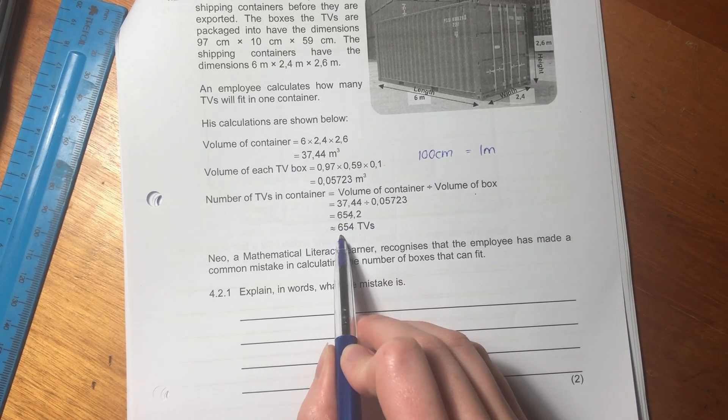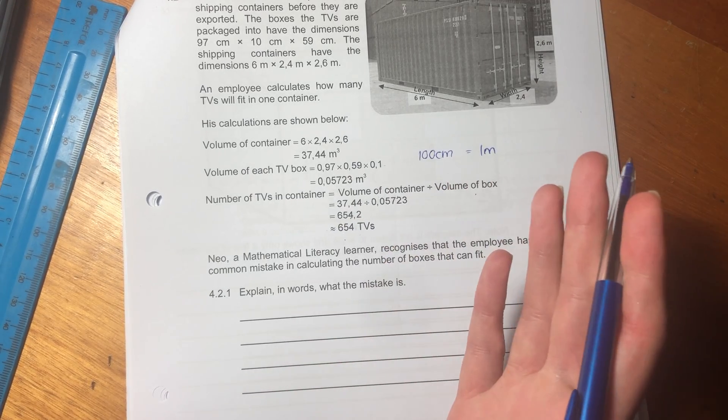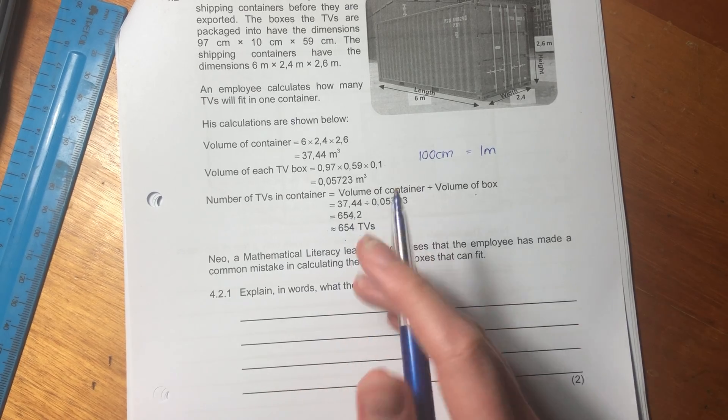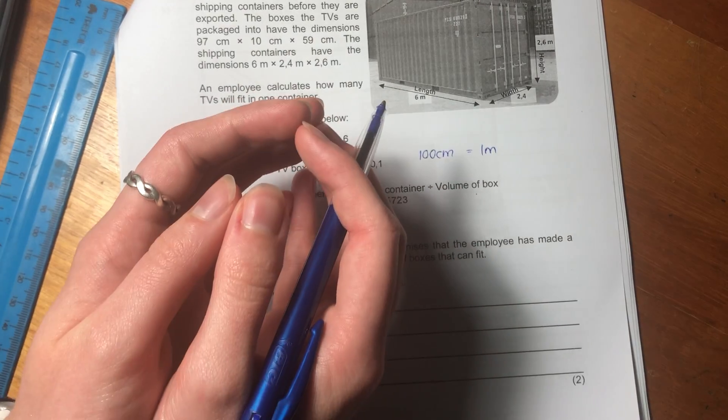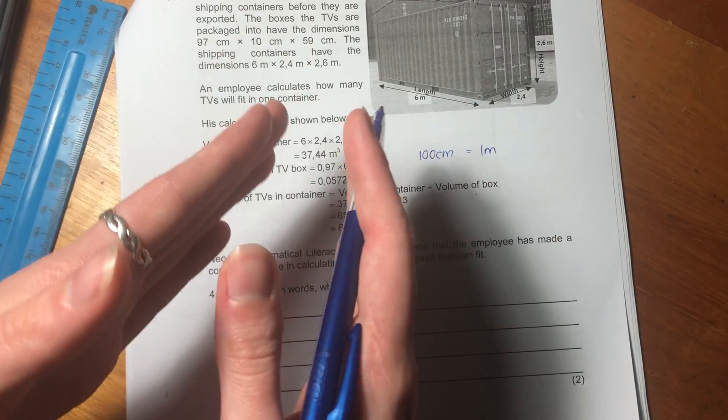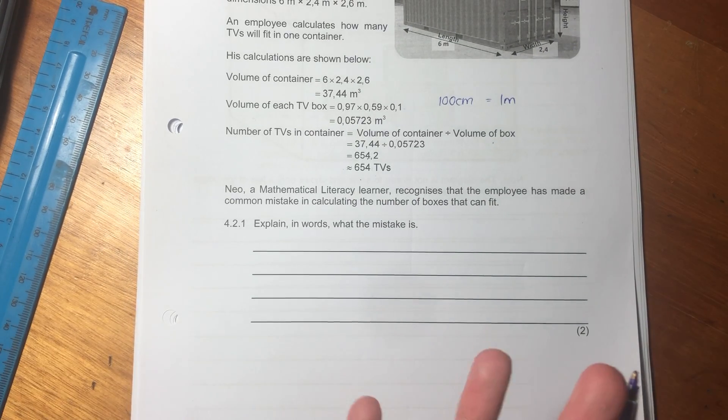Now, you might be saying, well, why did they do that? Because you can't fit in little bits of a TV. Because 0.2 is a certain portion of a TV, but you can't cut the TV into bits and put it in.